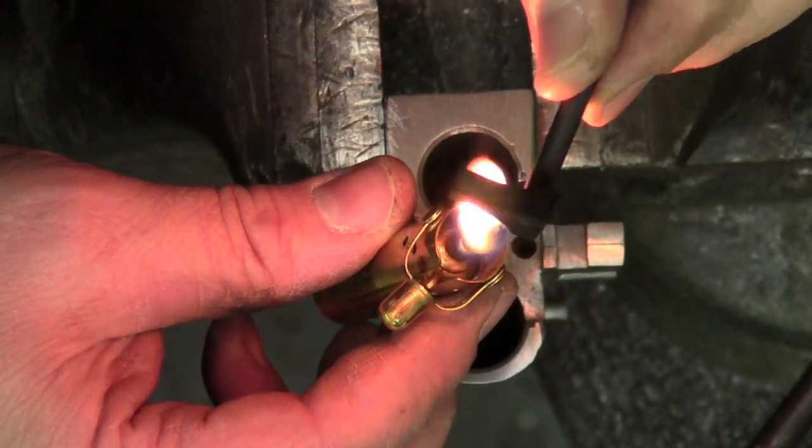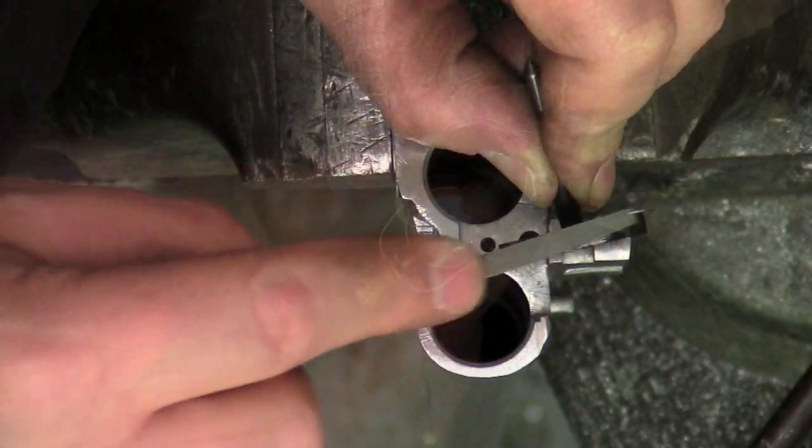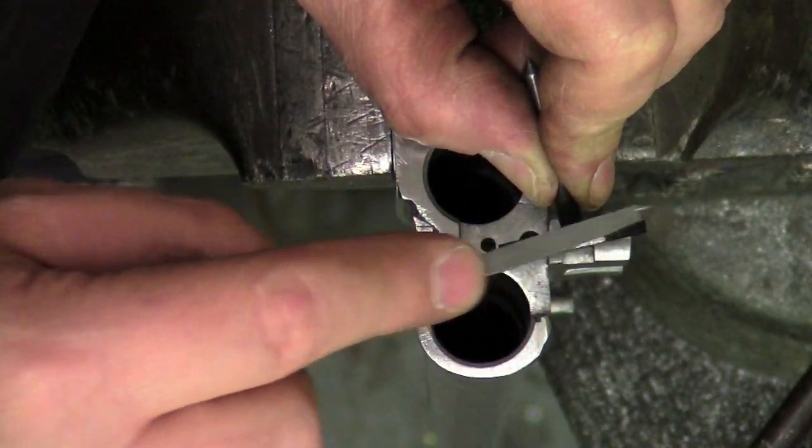As the extractor blank is filed closer to the finished dimension, it is smoked with soot, tri-fit, and filed for precision fitting.